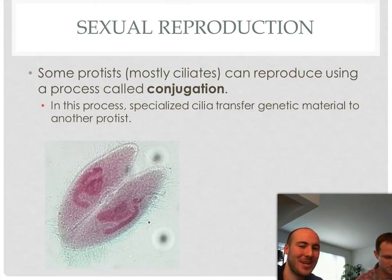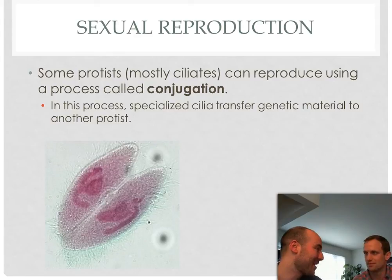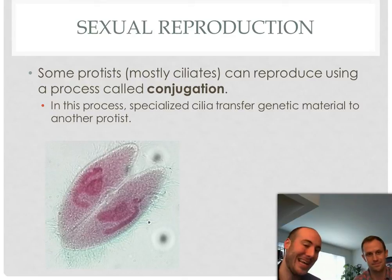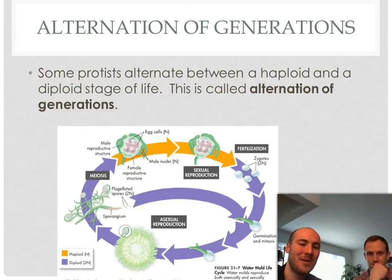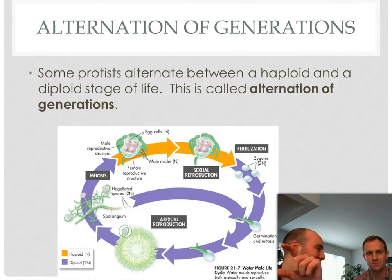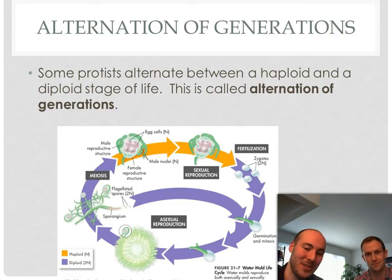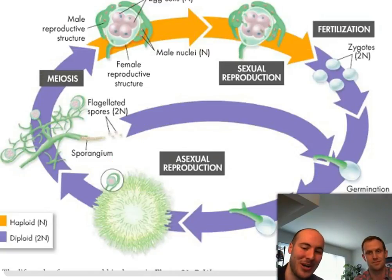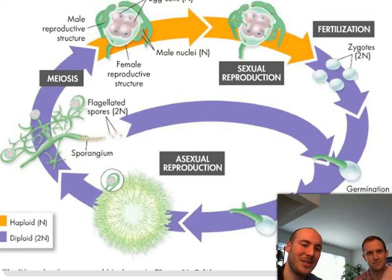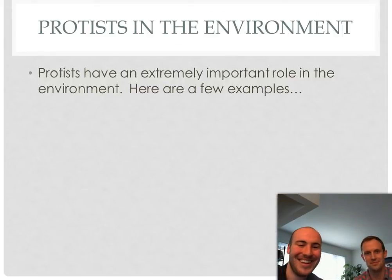When a protist sexually reproduces, it does so through a process called conjugation — they have specialized structures through which they can transfer genetic material from one organism to another. Some protists also show alternation of generations, where they have a life stage in which they're haploid, meaning one copy of all their chromosomes, and another stage in which they're diploid, meaning two copies. Water molds are an example showing how organisms can alternate through these various stages.